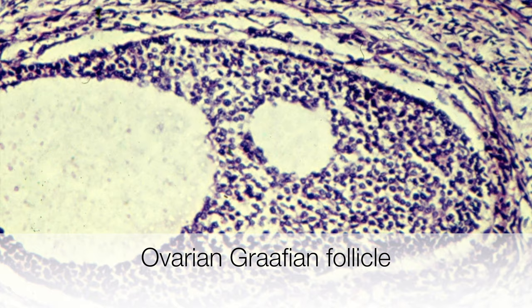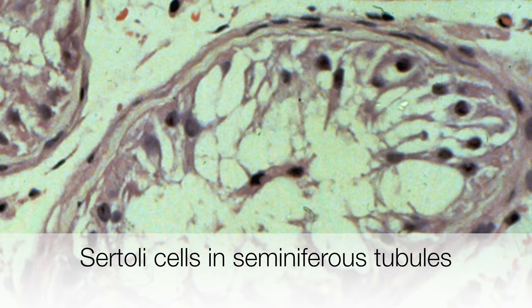This is a Graafian follicle in the ovary, and the individual cells making up the follicle are known as granulosa cells. This section of testes shows seminiferous tubules lined by Sertoli cells.